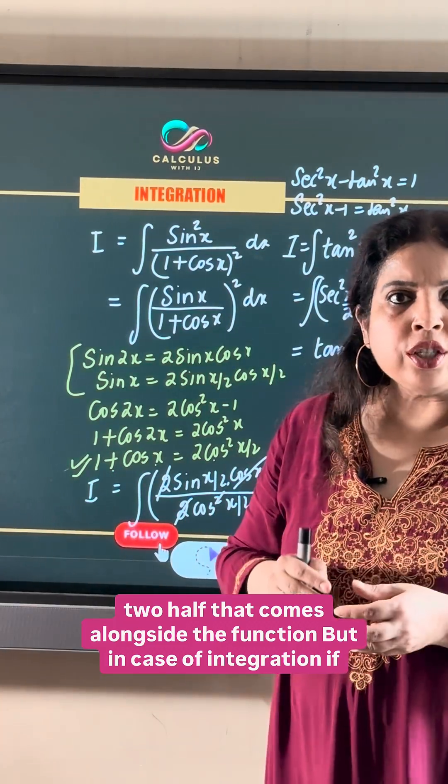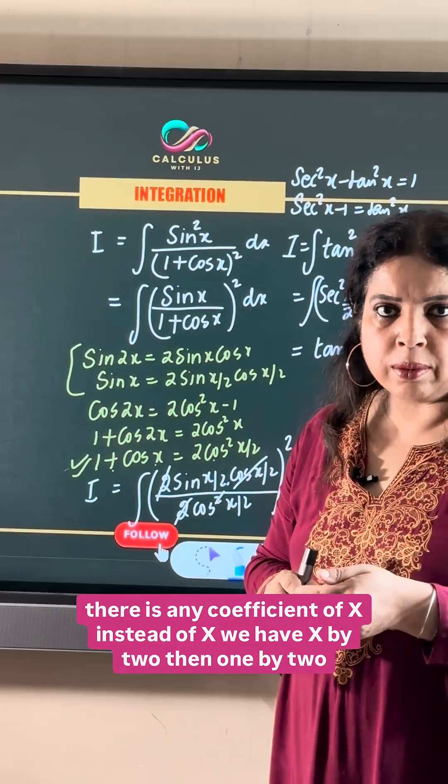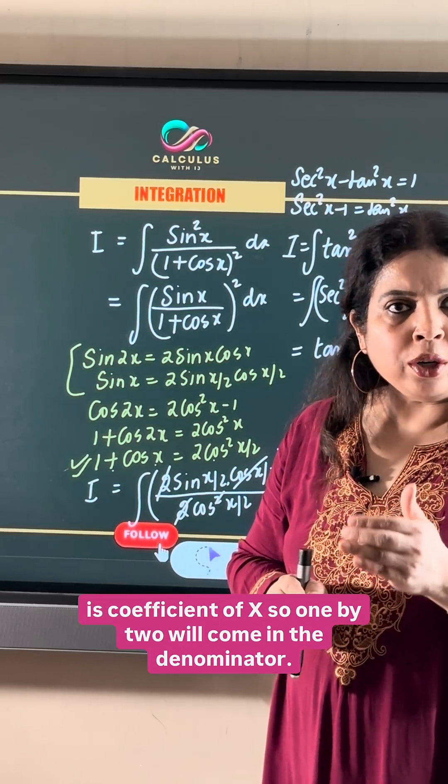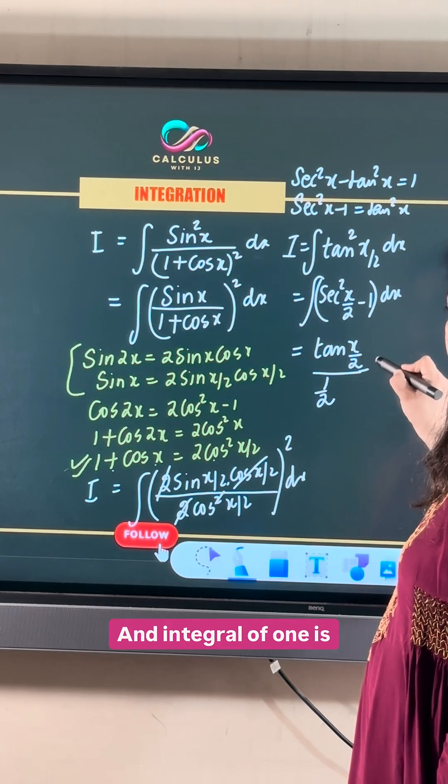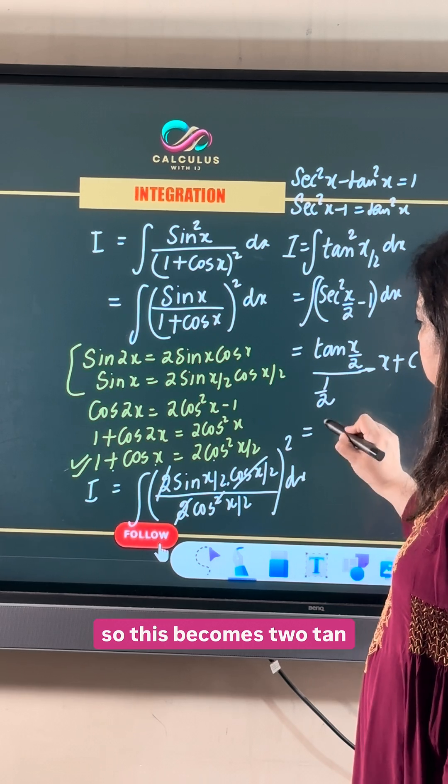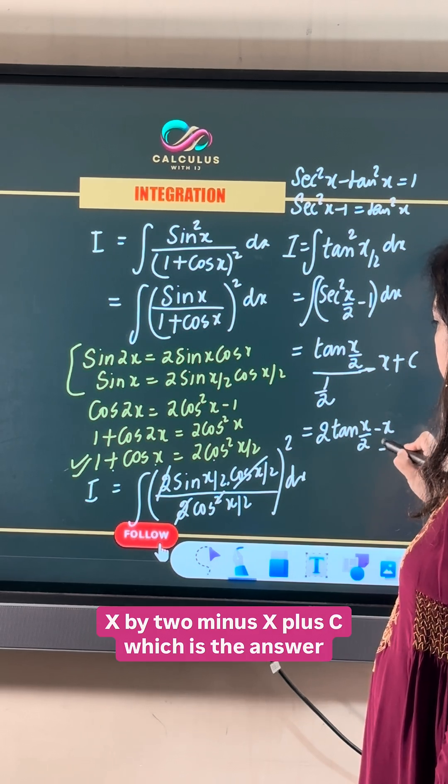In case of integration, if there is any coefficient of x, instead of x we have x by 2, then 1 by 2 is the coefficient of x, so 1 by 2 will come in the denominator. The integral of 1 is x. So this becomes 2 tan x by 2 minus x plus c, which is the final answer.